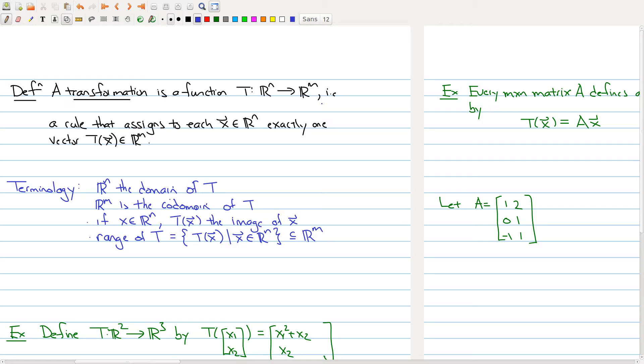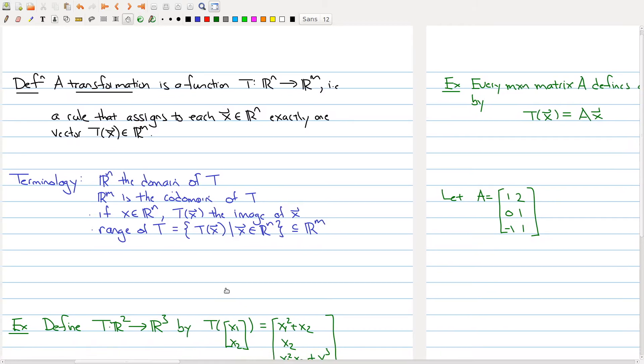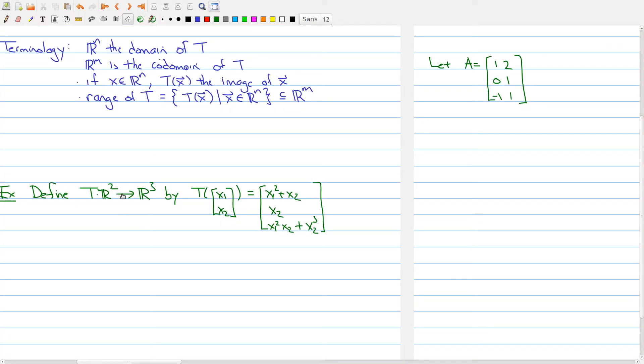And I have an example down below here of a transformation. So this is a transformation from R2, so 2-space to 3-space. And what it does is it takes a vector, a 2-tuple, to a 3-tuple. So you can think about what's happening here is each vector in R2 is mapped to a vector in R3. So really, we're giving a rule of how we take a vector on this side and mapping it to the vector on the other side.